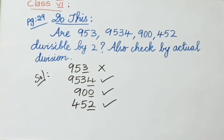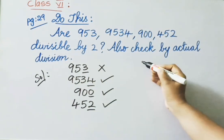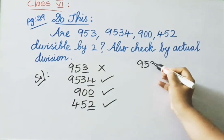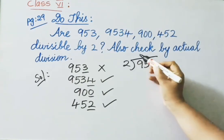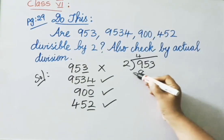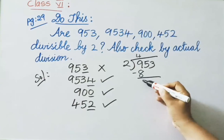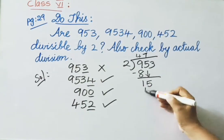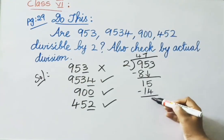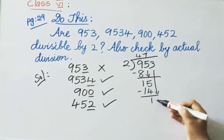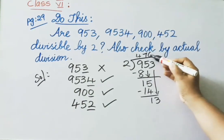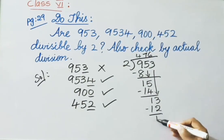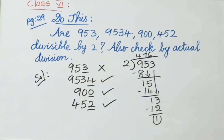Now let us do the division by 2 and verify. 953 divided by 2: working through the division, we get a remainder of 1. So 953 is not divisible by 2, which confirms our earlier answer.